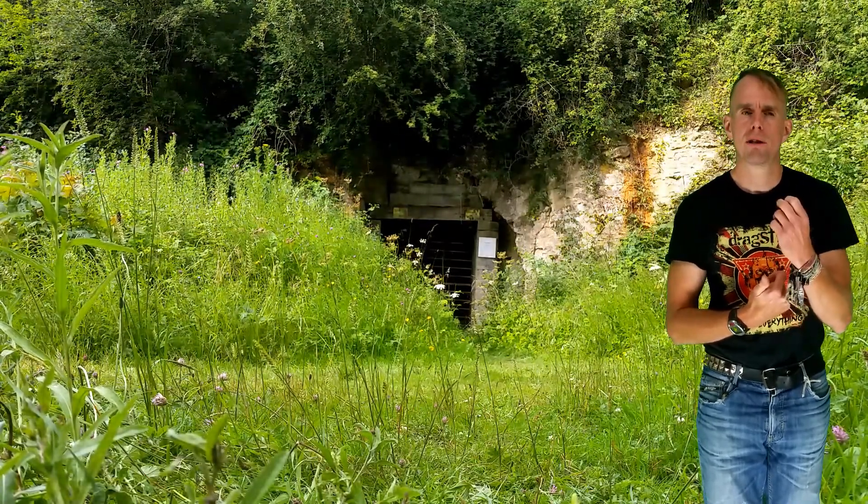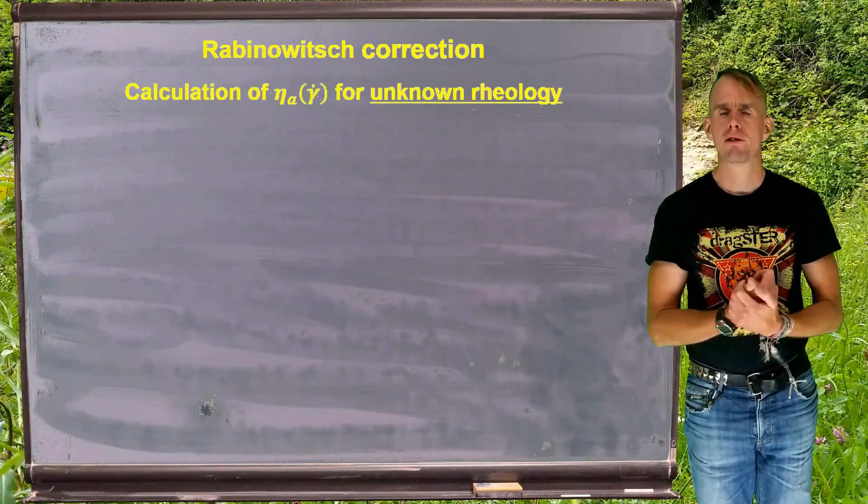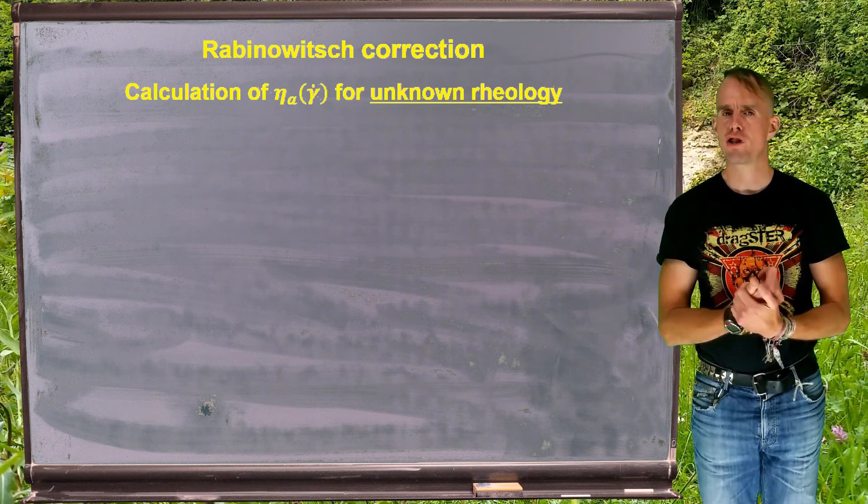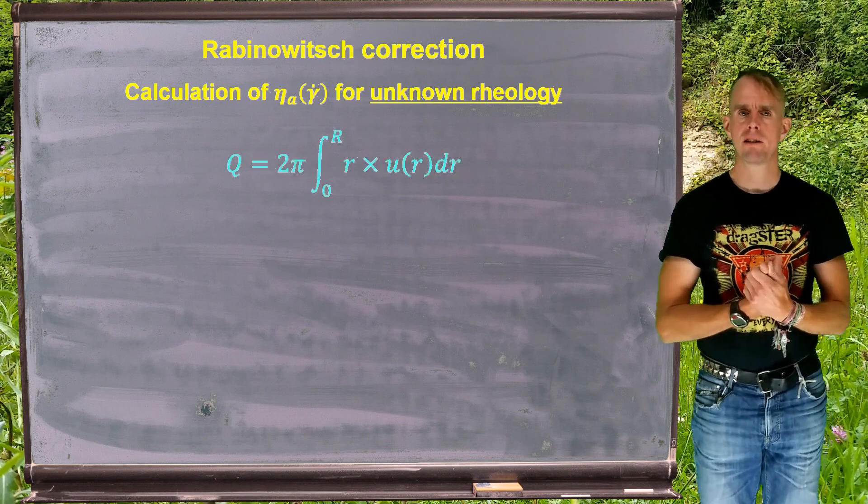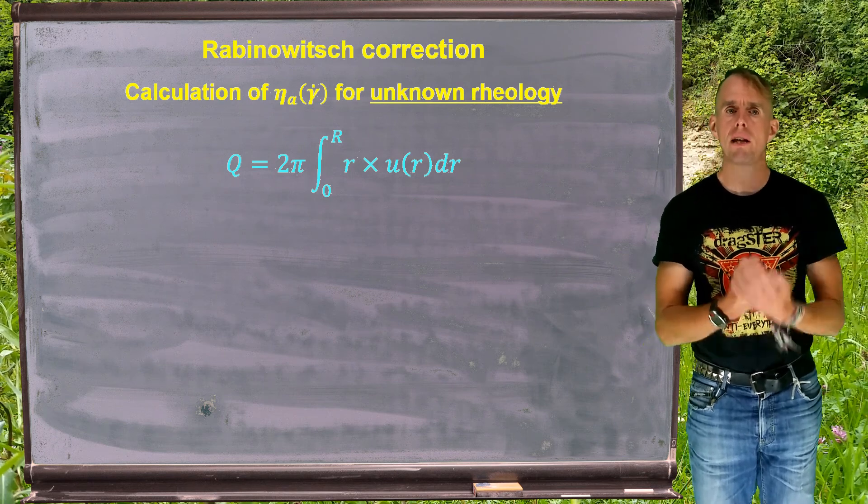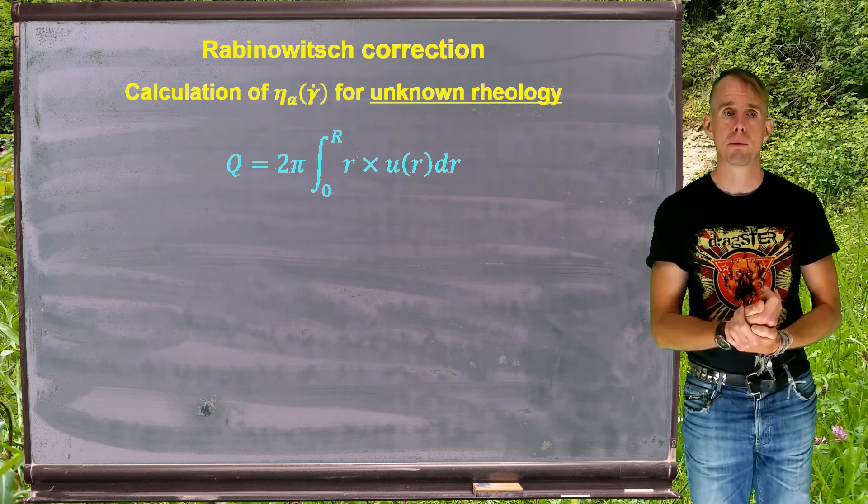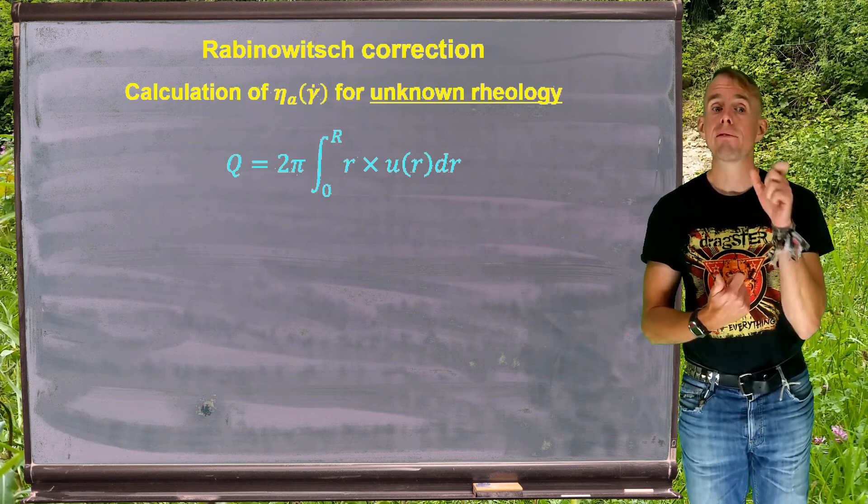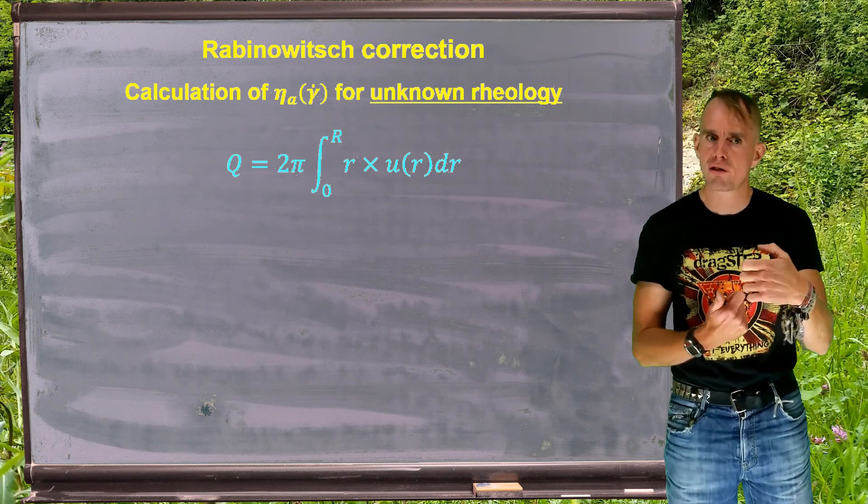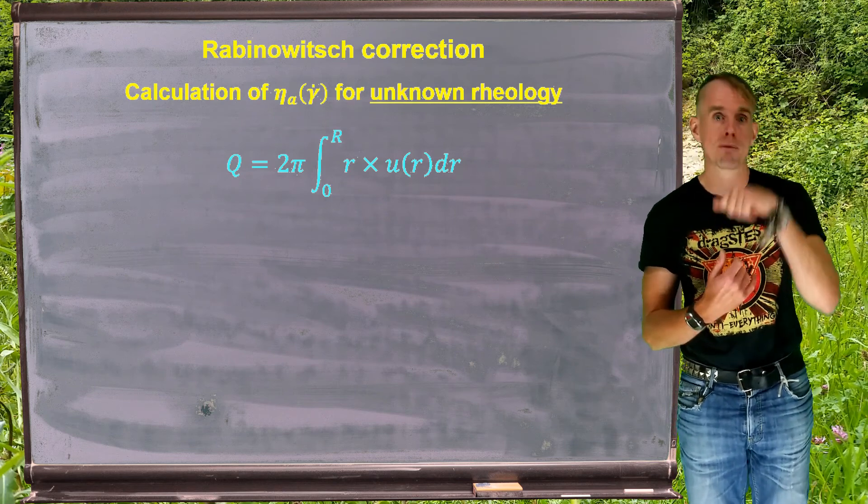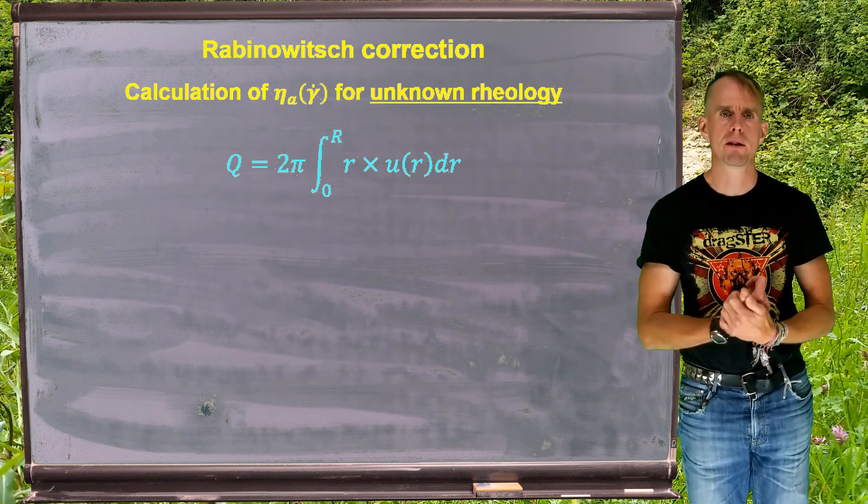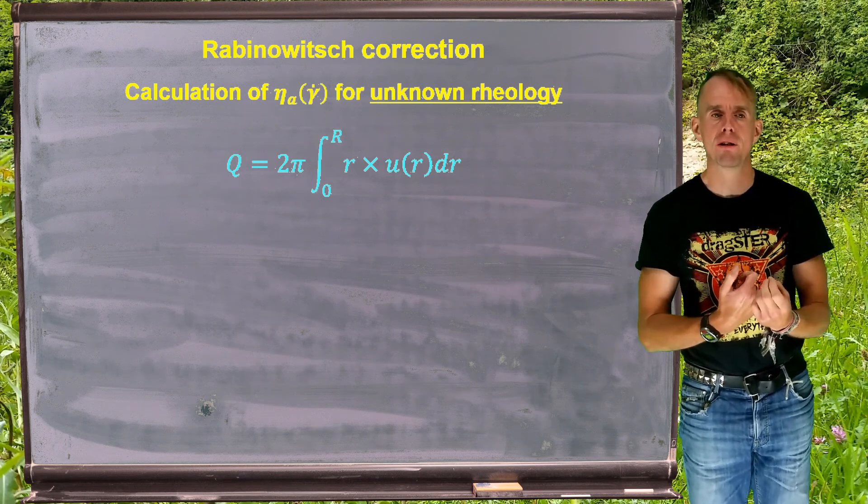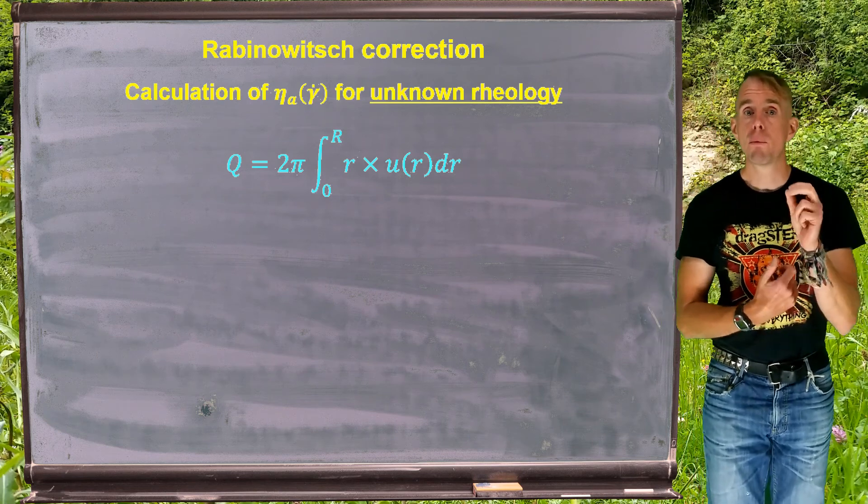We need to develop an experimental protocol that allows us to eliminate entry and exit pressure drops from the capillary pressure drop data. That is called the Bagley correction. So what we're going to do to start with is develop a workflow for how we can calculate apparent viscosity as a function of shear rate for an unknown rheology. We're going to start by reminding ourselves how we write down a volumetric flow rate if we know a velocity field.